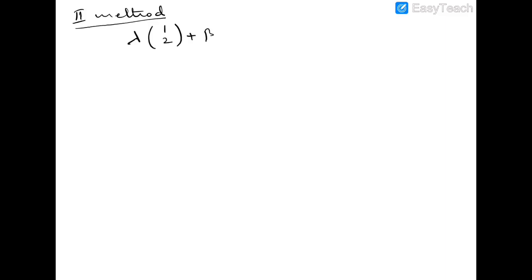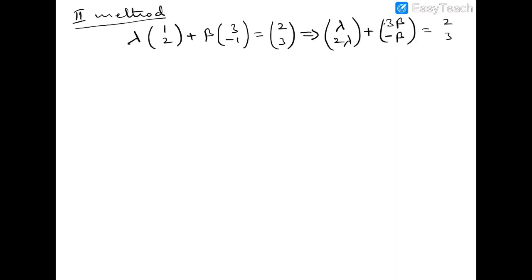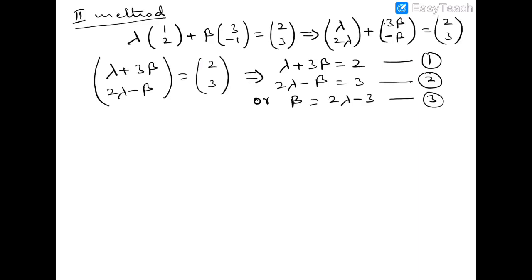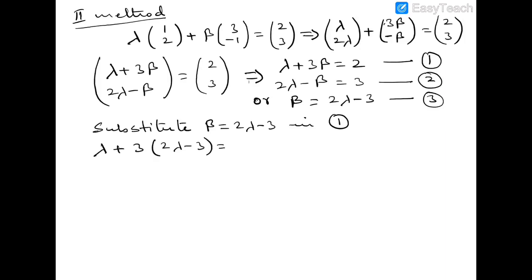In the second method, substitute: λ(1, 2) + β(3, −1) = (2, 3), giving (λ + 3β, 2λ − β) = (2, 3). Setting corresponding terms equal: λ + 3β = 2 (equation 1) and 2λ − β = 3 (equation 2). From equation 2: β = 2λ − 3. Substituting into equation 1: λ + 3(2λ − 3) = 2 → λ + 6λ − 9 = 2 → 7λ = 11, so λ = 11/7.